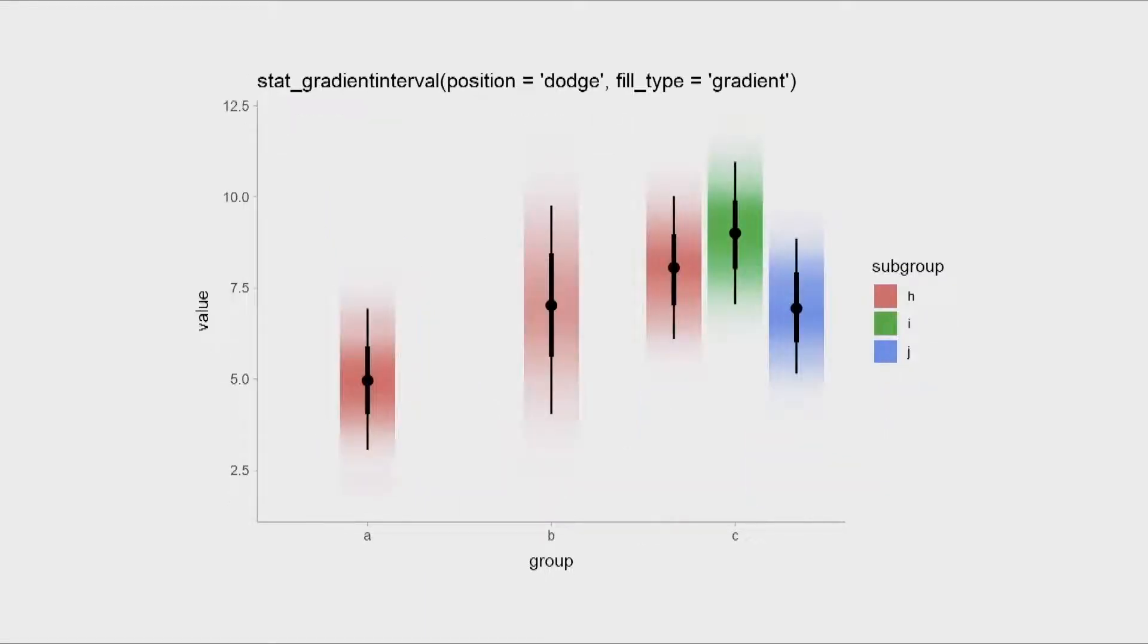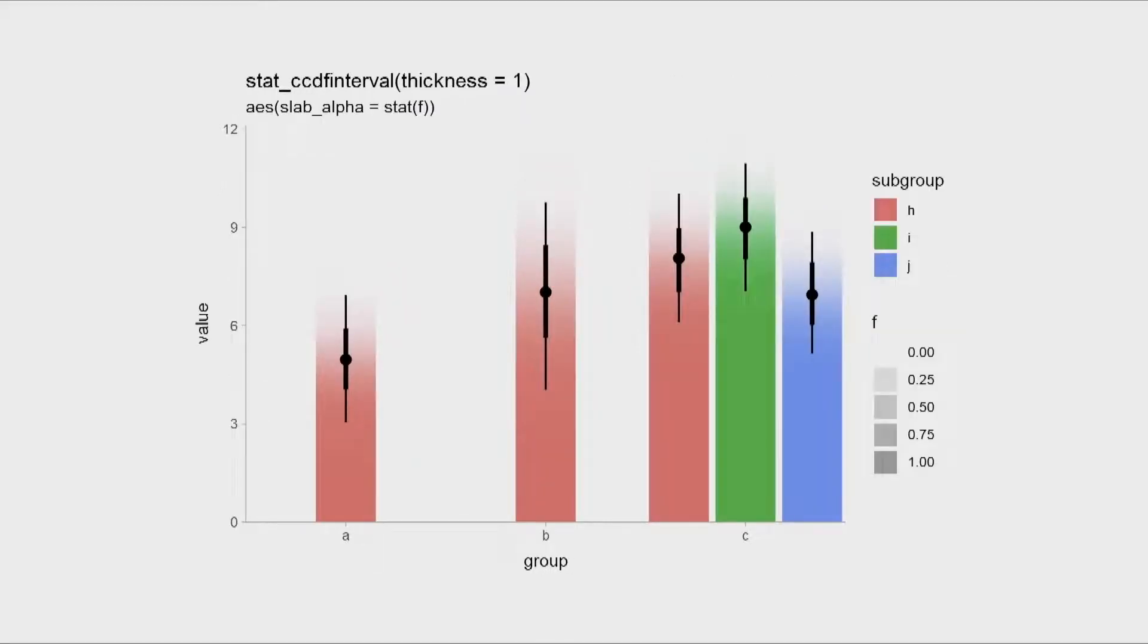Speaking of gradients, here's a gradient plot. This also shows the use of the dodge position from base ggplot with ggdist. Maybe you decide that you want to map the CDF onto it. Actually, this is the complementary CDF. You can think about this as an infinite number of bar charts with infinitesimal opacity all stacked on top of each other.